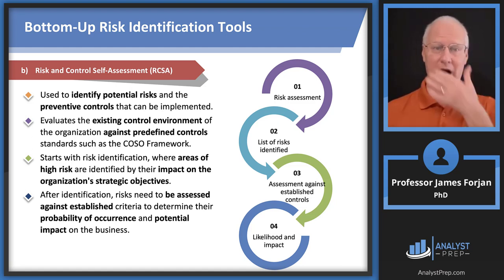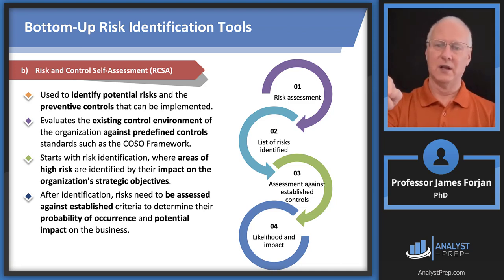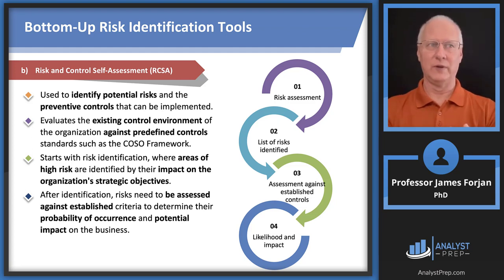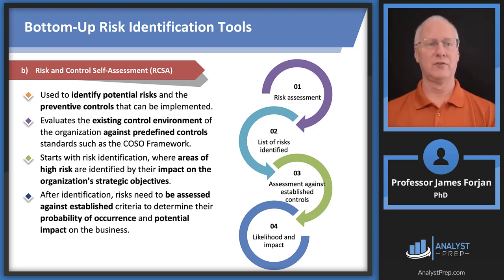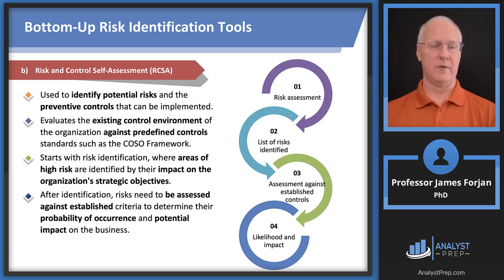How about the risk and control self-assessment, or RCSA? We're going to identify these potential risks and then try to implement preventive controls. Look at the little circle: assessment, risk identified, then established controls. For example, we identify the risk of fraud — Jim comes in with a fake ID. The control could be: call somebody to confirm who you say you are. The RCSA is super important to not only identify the risks, but then look at the last diamond point — assessed against some established criteria using our system of internal controls.